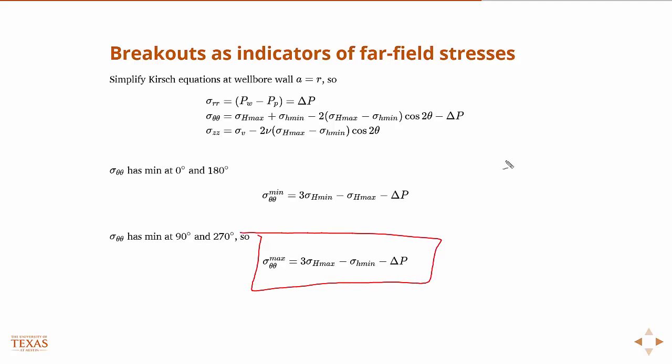So then if you remember, on our Mohr circle, we have basically σθθ max here, σθθ min here. And the other two are intermediate, so they're inside this. So really, this difference is what's going to determine—if we have an envelope that looks like that—it's the difference in the hoop stress that's going to determine if we fail or not.